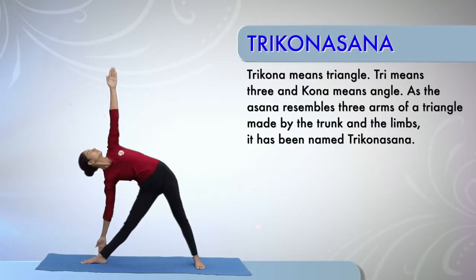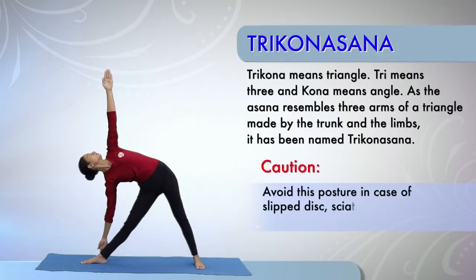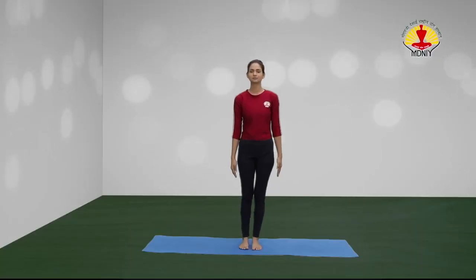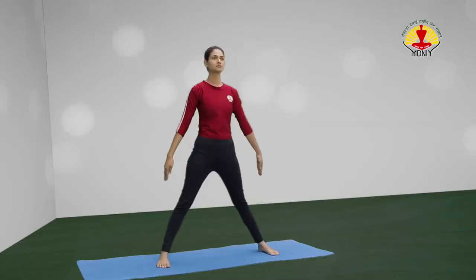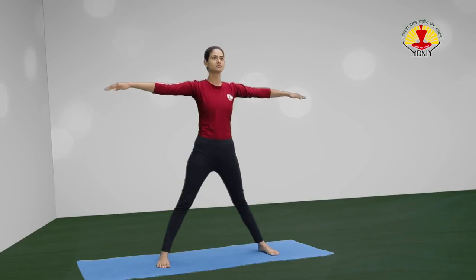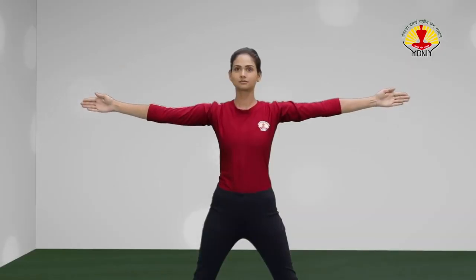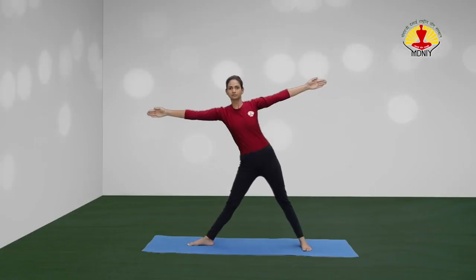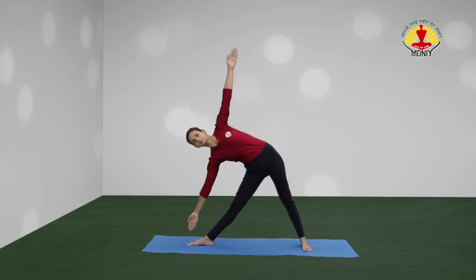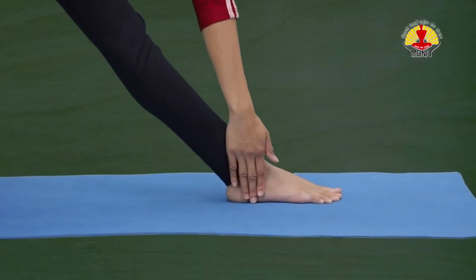Trikonasana or the triangle posture. Caution: avoid this posture in case of slipped disc, sciatica and after abdominal surgery. From the alert posture, spread out the feet three feet apart. Inhale and raise both the arms from the side up to the shoulder level with palms facing outwards. Turn the right foot towards the right side. Exhale and slowly bend to the right side, placing the right hand just behind the right foot.